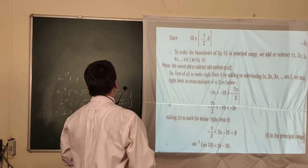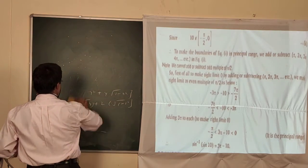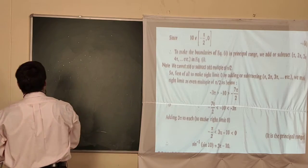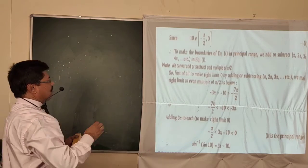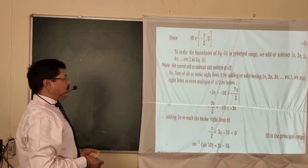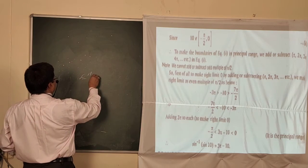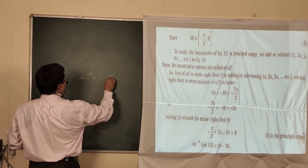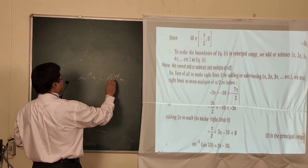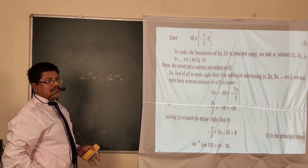For example, how to convert sin⁻¹x in terms of cos⁻¹x, tan⁻¹, or other forms. For this, you know that sin²x + cos²x = 1, so cos²x = 1 - sin²x, which gives cos x = √(1 - sin²x).